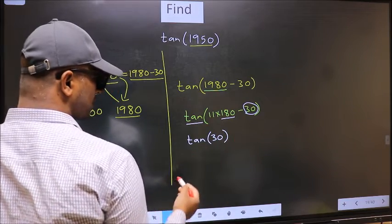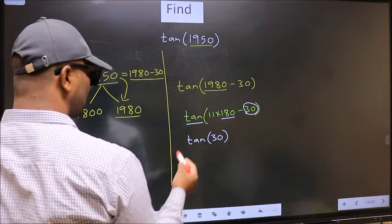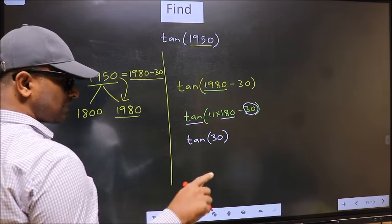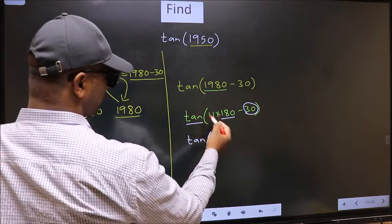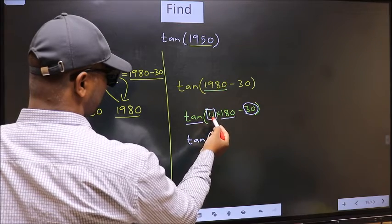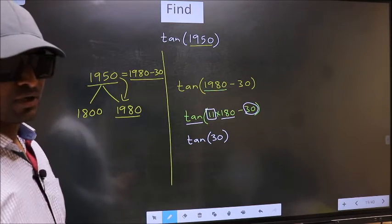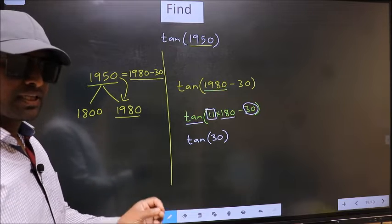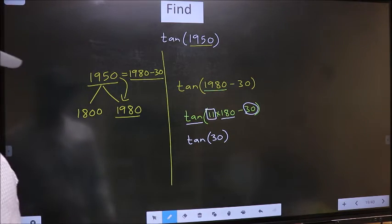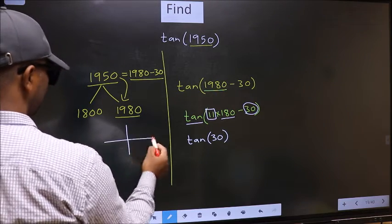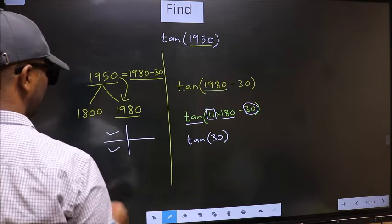Now the question is, will we get here plus or minus? To answer that, we should look at the number before 180, that is 11. And 11 is odd. All the odd multiples of 180 lie either in the second or in the third quadrant.